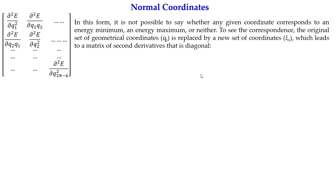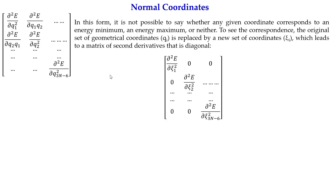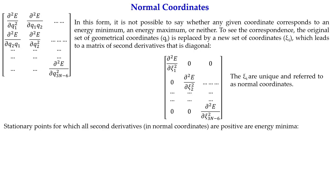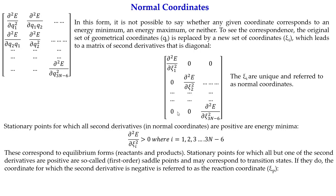The problem with the Hessian in its original coordinates is that we cannot easily determine whether any given coordinate corresponds to an energy minimum, maximum, or neither. To simplify, we transform to a new set of coordinates by diagonalizing this matrix. After diagonalization, q is replaced by ζ (called the normal coordinates or generalized coordinates). For a minimum, all diagonal elements are greater than zero; for a transition state, all are positive except one (ζₚ), which is negative.